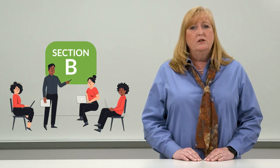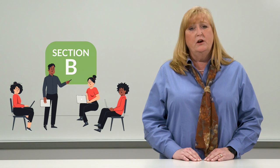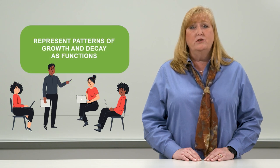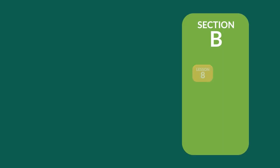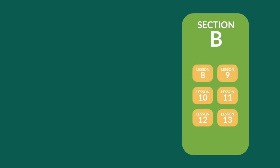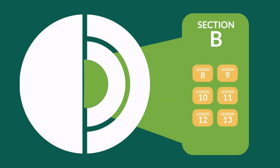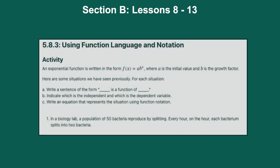In this section, students focus their attention on how to represent patterns of growth and decay as functions. The six lessons in Section B form the core of student understanding about exponential functions. Here, students begin to employ the notation and terminology of functions.